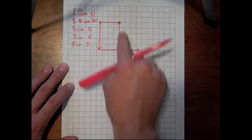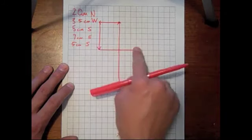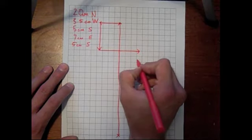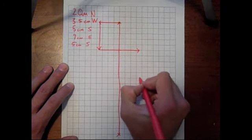And notice how for every vector, we're going tip to tail, tip to tail. One vector right after the other. Now we're going to do our last vector, 5 centimeters south, 1, 2, 3, 4, 5.